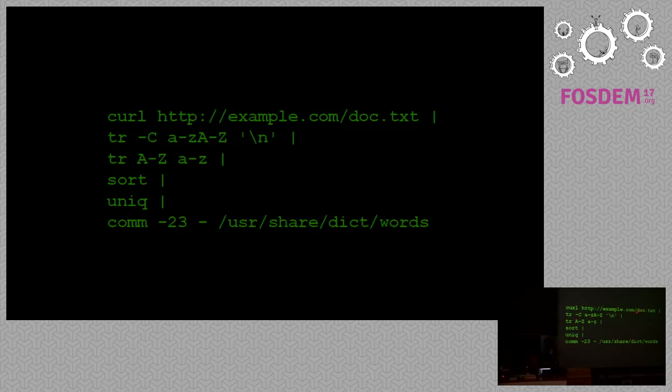So we can take a document from the web, translate all the words and separate them into a word in each line, move the uppercase to lowercase, sort them, get one word on each line, remove duplicate words, and then find with comm the words that are not in the dictionary. And those are the spelling errors. So pipelines are extremely powerful.